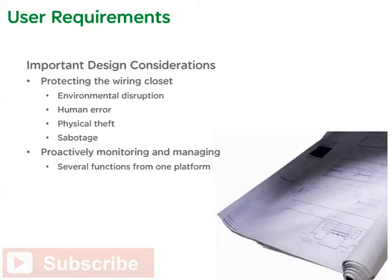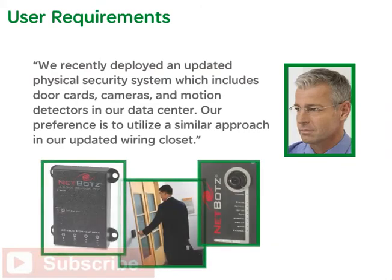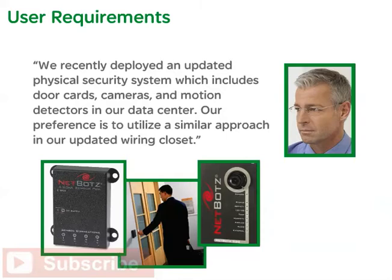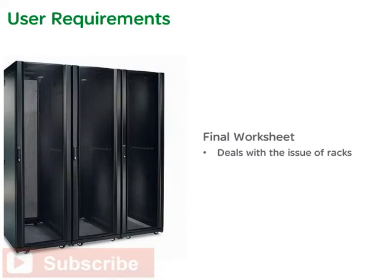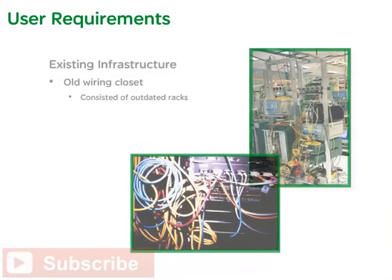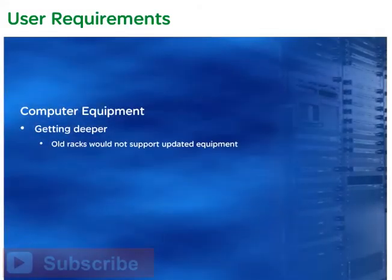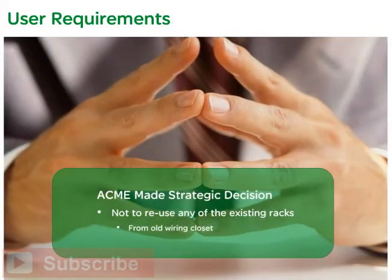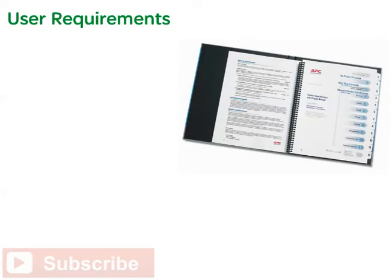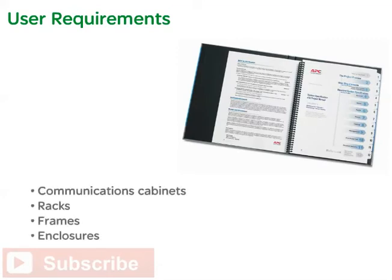Protecting the wiring closet from environmental disruption, human error, physical theft and/or sabotage, along with proactively monitoring and managing several functions from one platform, were all identified as important design considerations. Kelly discussed the plan for monitoring and management: Acme had recently deployed an updated physical security system including door cards, cameras, and motion detectors in their data center, and their preference was to utilize a similar approach in the updated wiring closets. The final worksheet dealt with the issue of racks — the existing infrastructure consisted of outdated racks that would not support updated, deeper computer equipment, so Acme made a strategic decision not to reuse any existing racks.